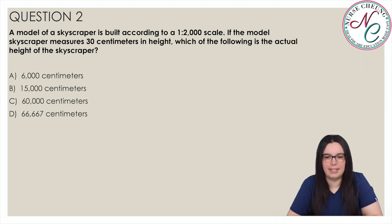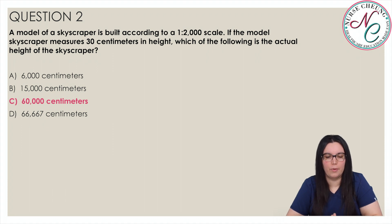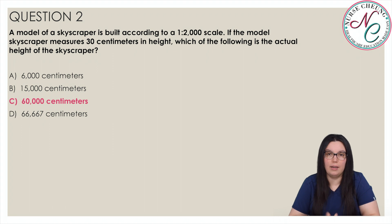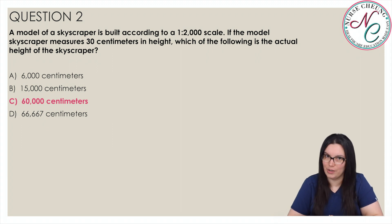Question 2. A model of a skyscraper is built according to a 1 to 2,000 scale. If the model skyscraper measures 30 centimeters in height, which of the following is the actual height of that skyscraper? Is it A, 6,000 centimeters; B, 15,000 centimeters; C, 60,000 centimeters; or D, 66,667 centimeters? The correct answer is C, 60,000 centimeters. We create our proportions: 1 divided by 2,000 is equal to 30 centimeters over h. We cross multiply to get 1h equal to 2,000 times 30, which is 60,000 centimeters.